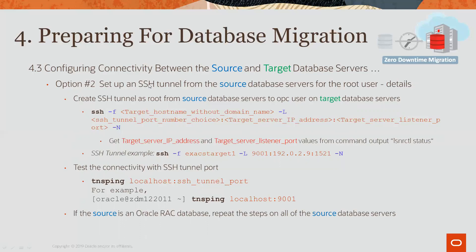After you have done that, then you would set up your SSH tunnel. This is also very straightforward. You would use SSH -F, the name of your target database server, -L, a port which you want to use — in this case we are using 9001, which is an available port — colon, the IP address of the endpoint on your target server and a port number. You would get these IP addresses and port numbers by running lsnrctl status on your target database server, and I will give you an example of that in a moment.